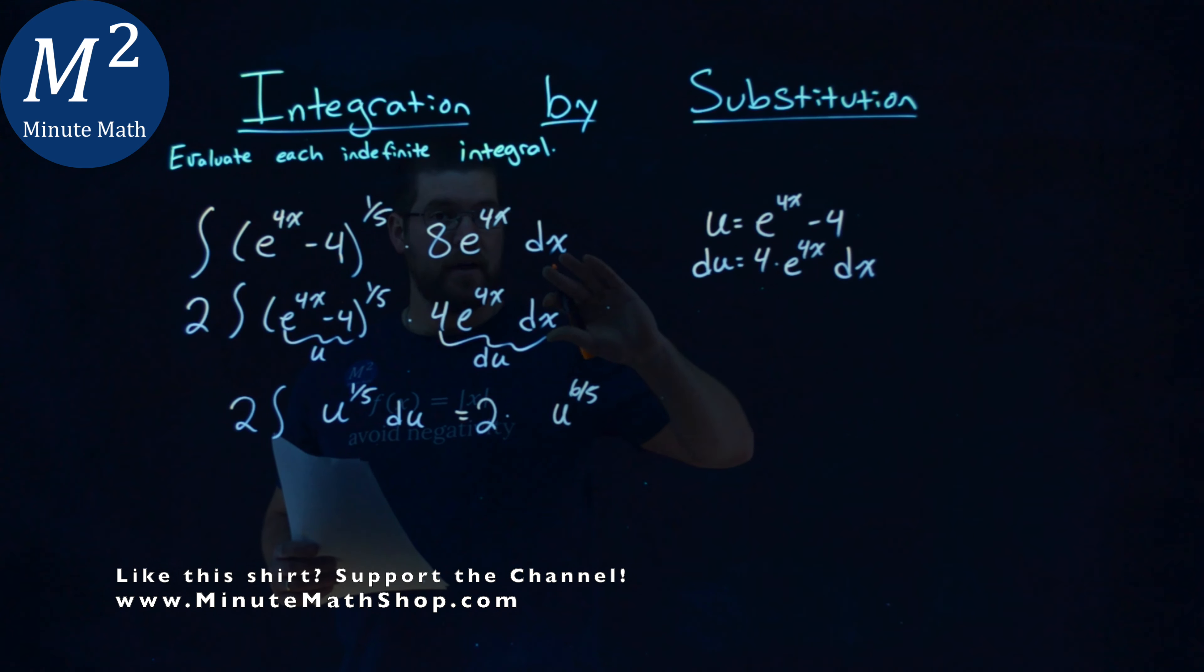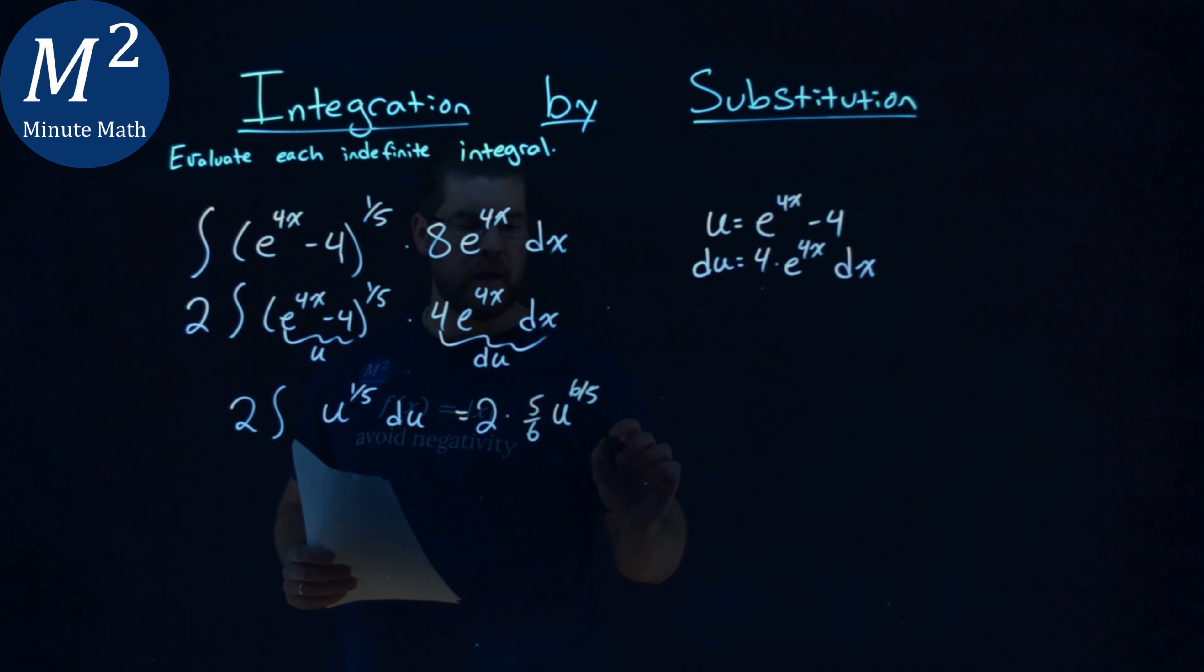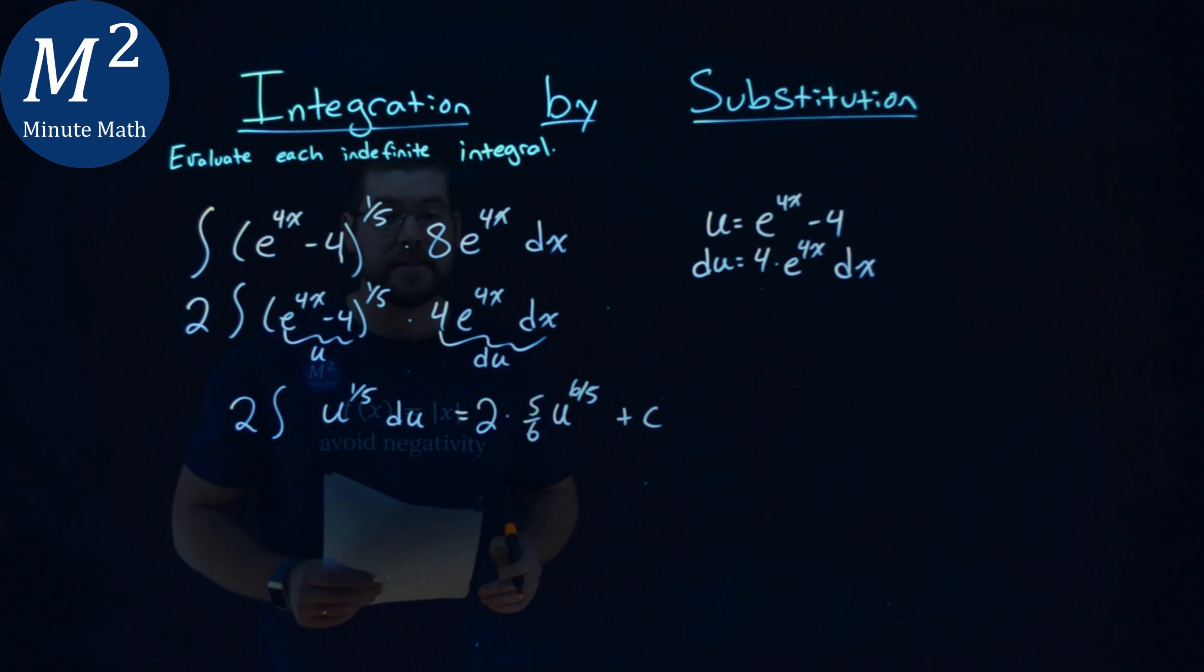Multiply that up front by the flip of that, 5/6th. Then we have the plus c going on here.